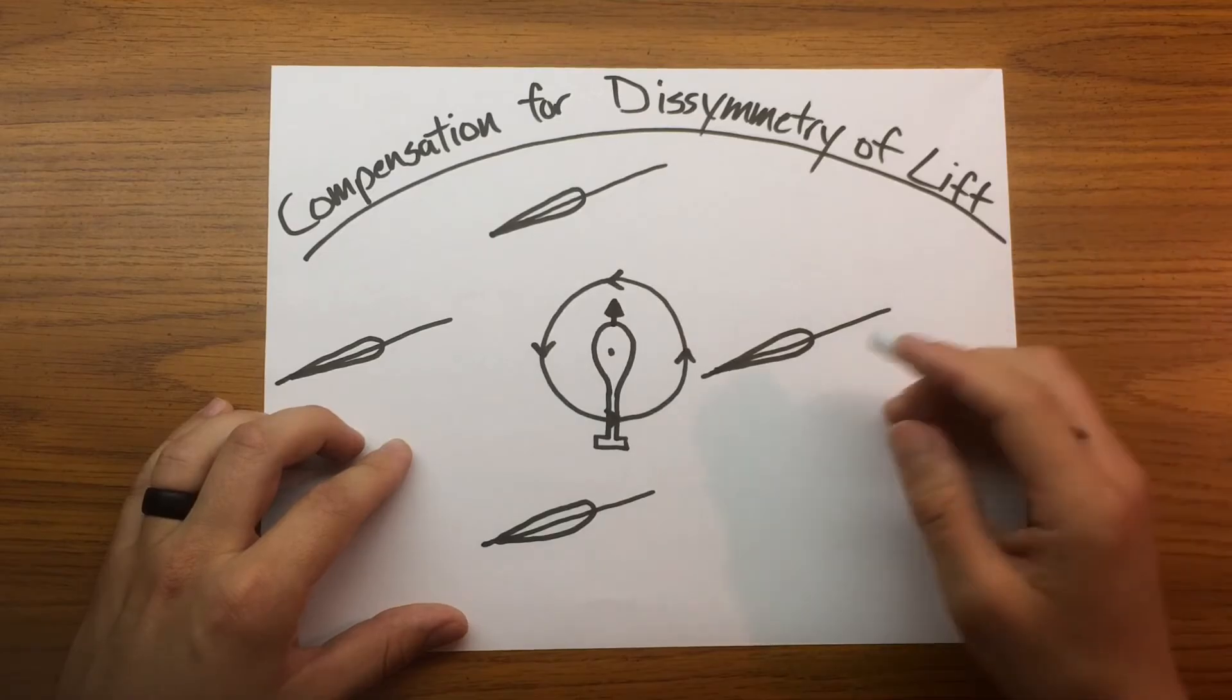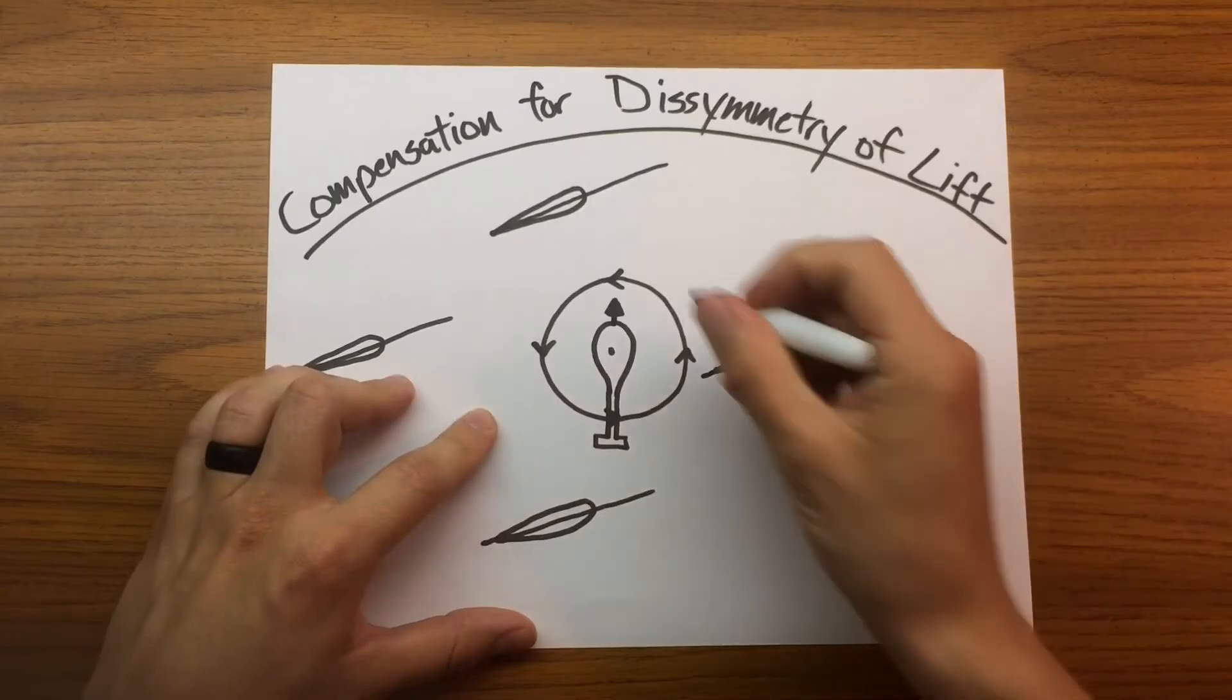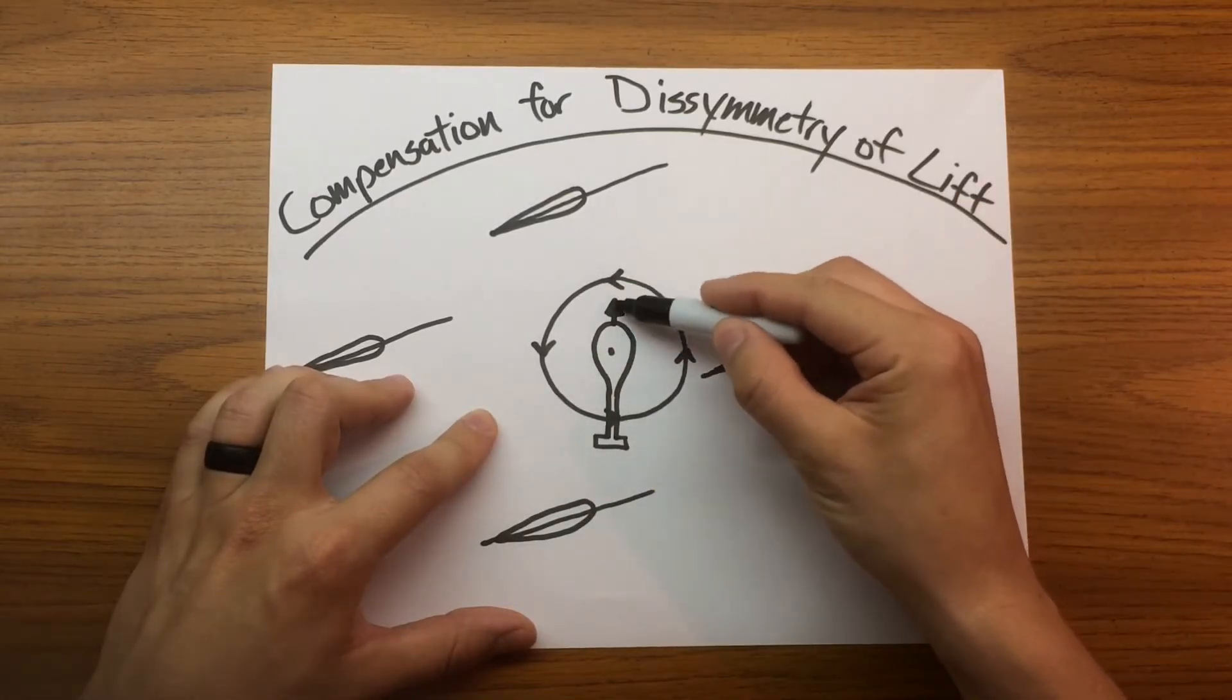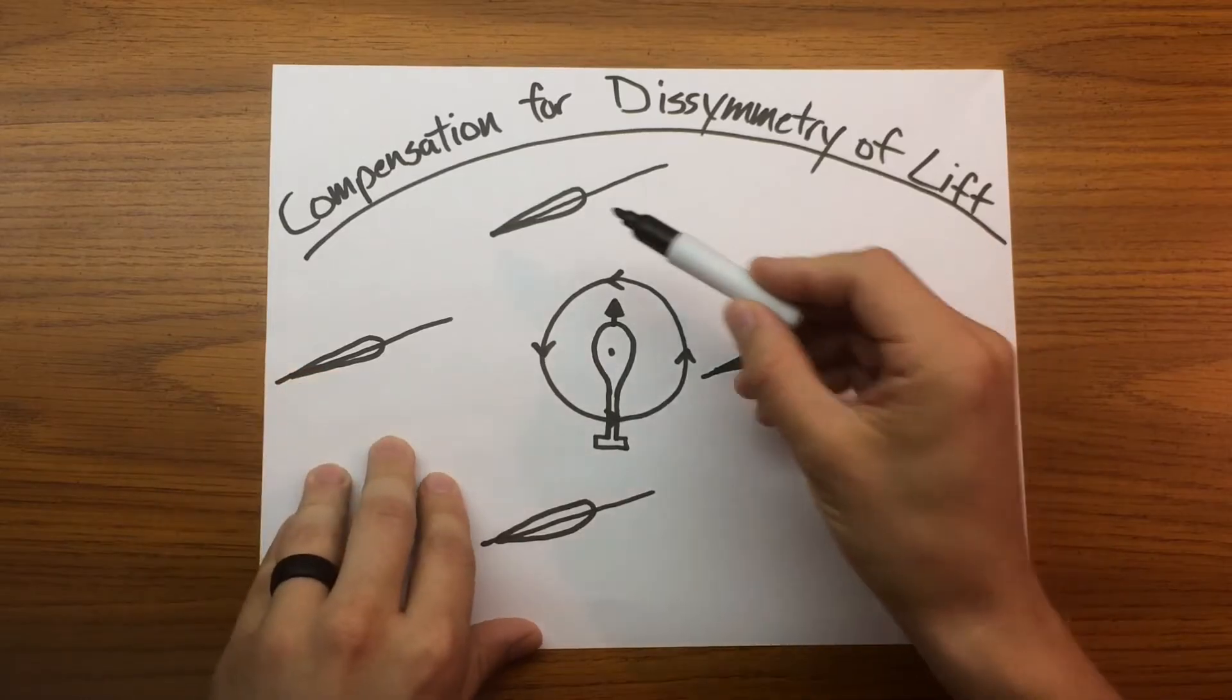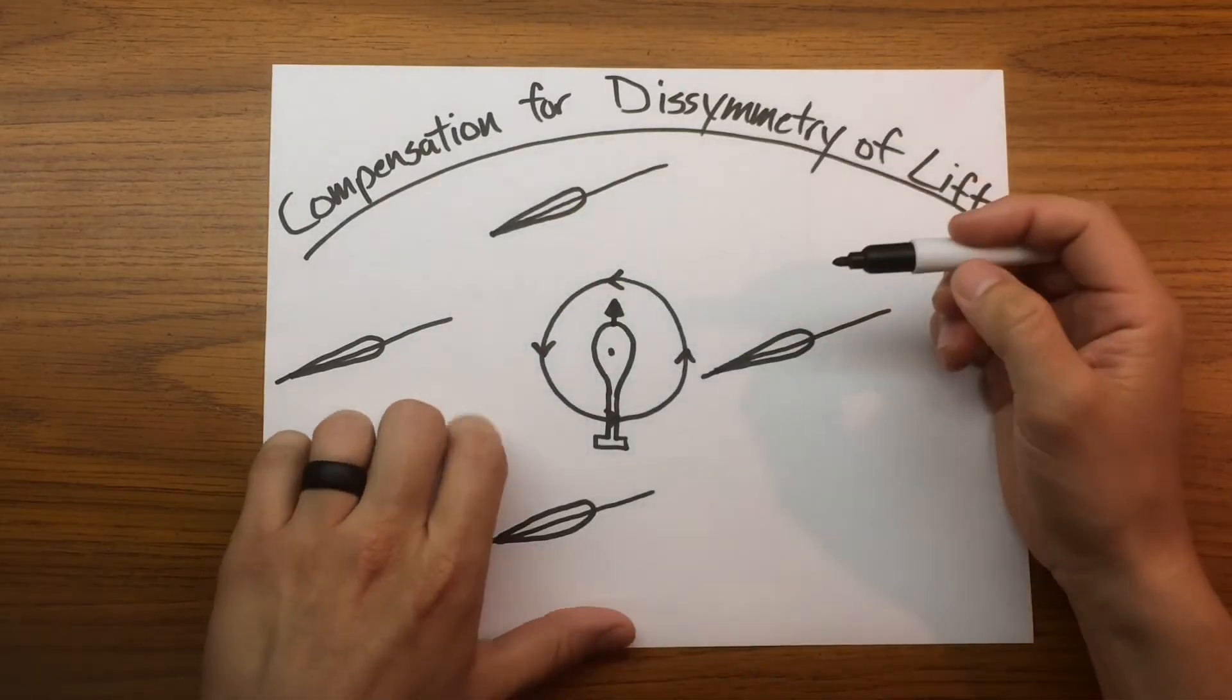So what does that look like? Well, we have the same setup as we have for all of our other diagrams, so counterclockwise turning rotor system and the helicopter transitioning into forward flight. Now we'll have cross sections of the blade in their respective field of travel.